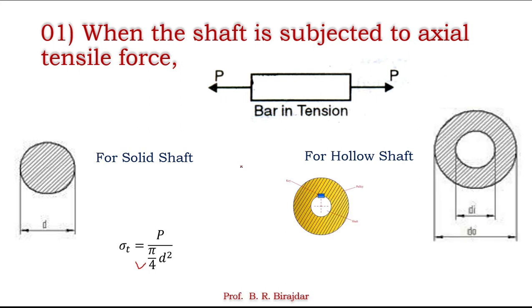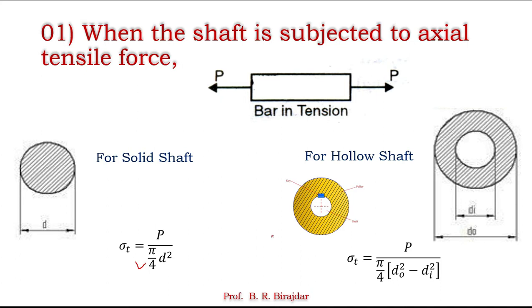For the hollow shaft, the only difference is the area. Inside there is a hollow part, so there are two diameters — outer diameter d_o and inner diameter d_i. The tensile stress σ_t equals load P divided by the area π/4 · (d_o² − d_i²). This is the first case: finding the diameter when only tensile force acts.